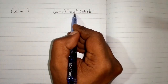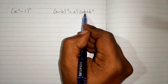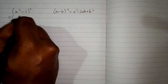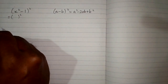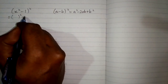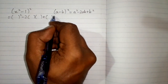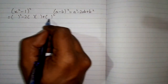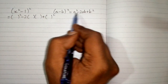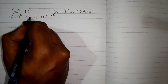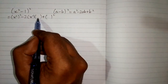We put x squared in place of a and 1 in place of b in this formula. First we draw the structure of the formula with brackets: a squared minus 2 times a times b plus b squared. Then we substitute x squared in place of a and 1 in place of b at each position.